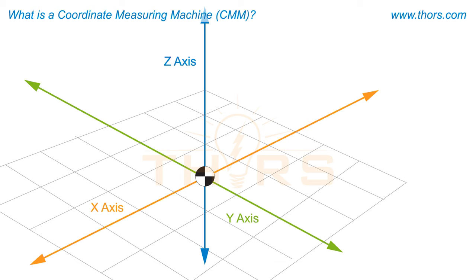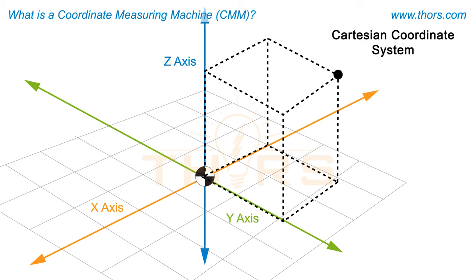CMMs can measure in any three-dimensional coordinate system such as the Cartesian coordinate system that defines a point by the distance between the point and the origin along the X, Y, and Z axes.